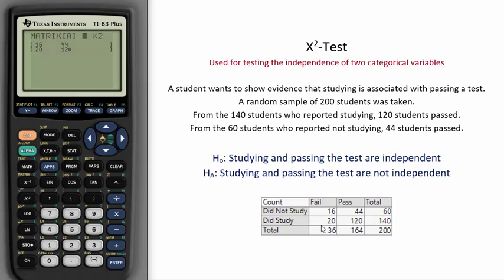From the 60 students who reported not studying, 44 passed, and 16 failed. This matrix was entered into the calculator.